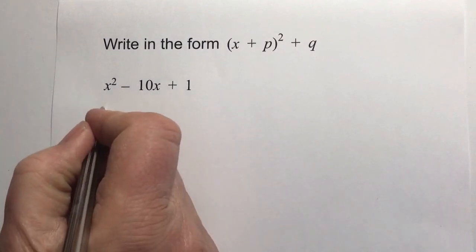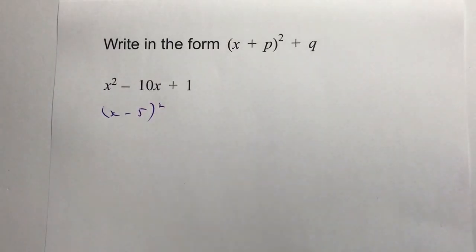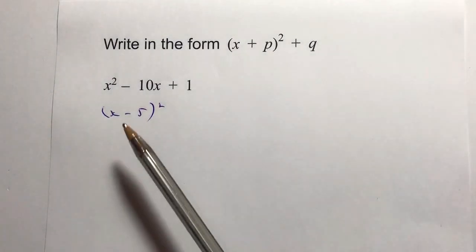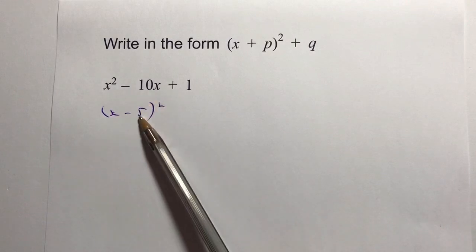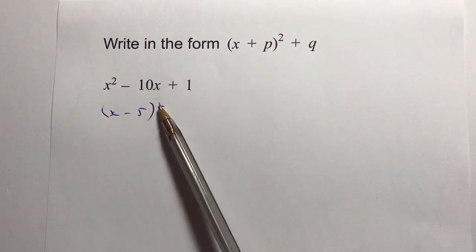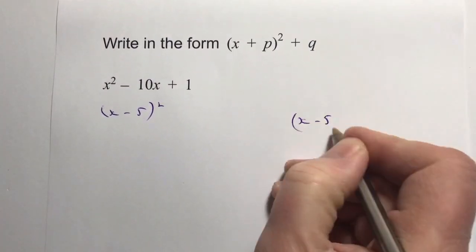We write them as (x - 5)². Now what I've done there is I've halved this value, so half of -10 is -5. I put that in brackets and then I square it.